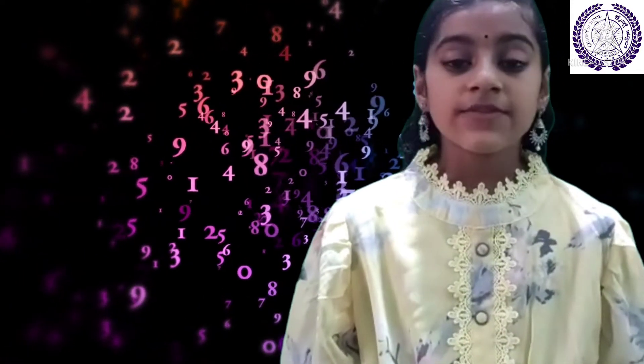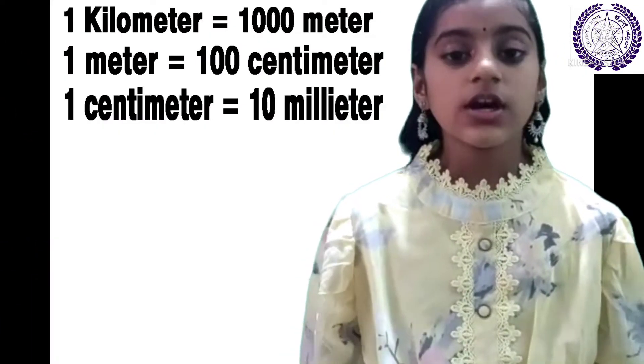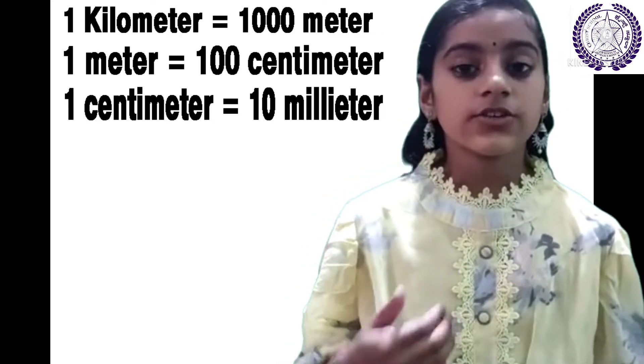There are three basic formulas that we need to use by converting the units of length. 1 kilometer is equal to 1000 meters, 1 meter is equal to 100 centimeters and 1 centimeter is equal to 10 millimeters.